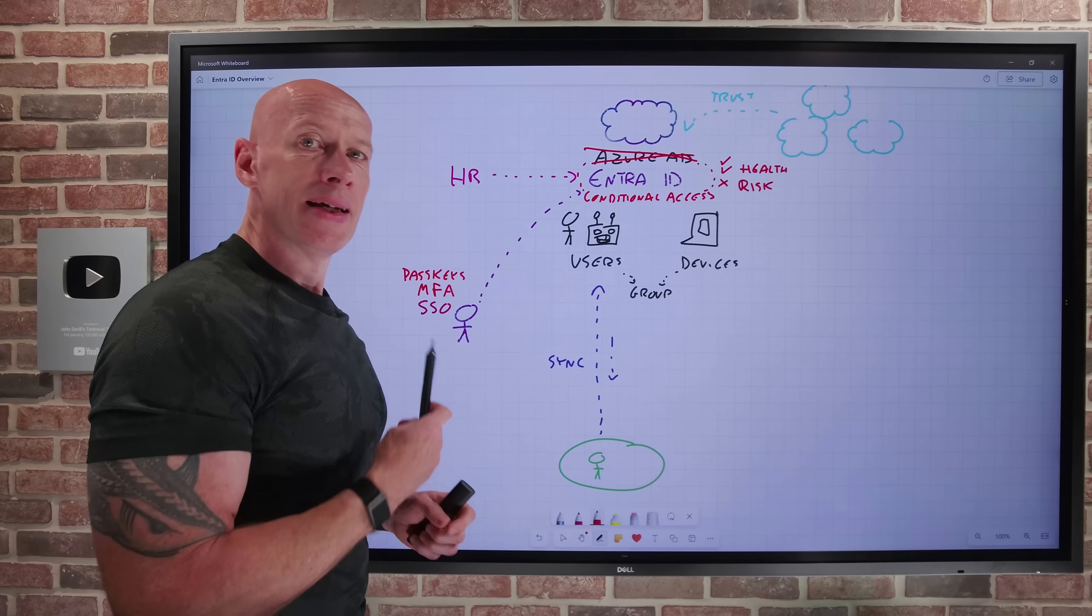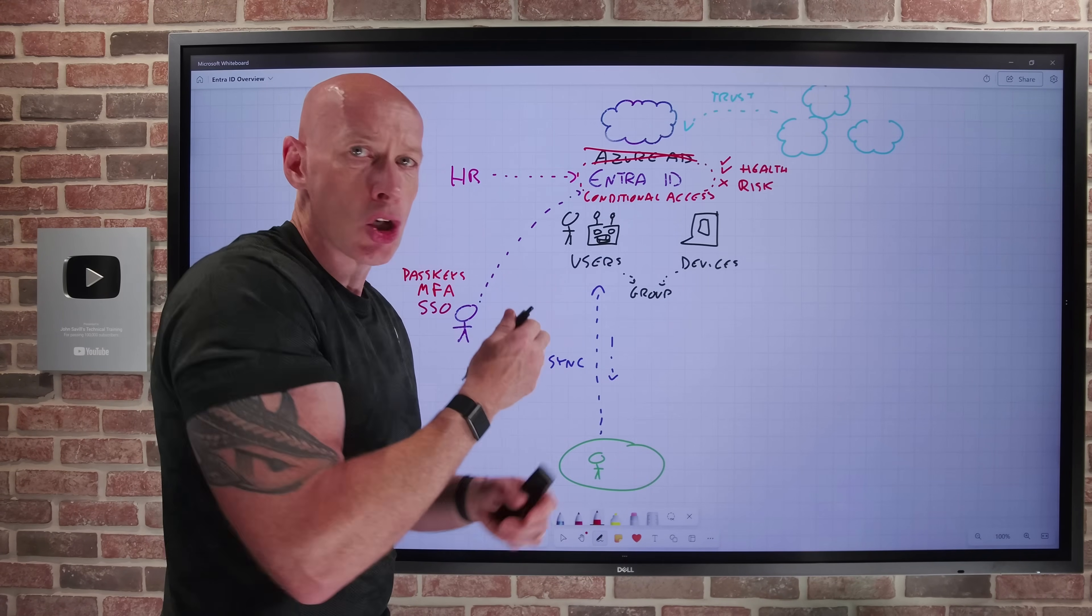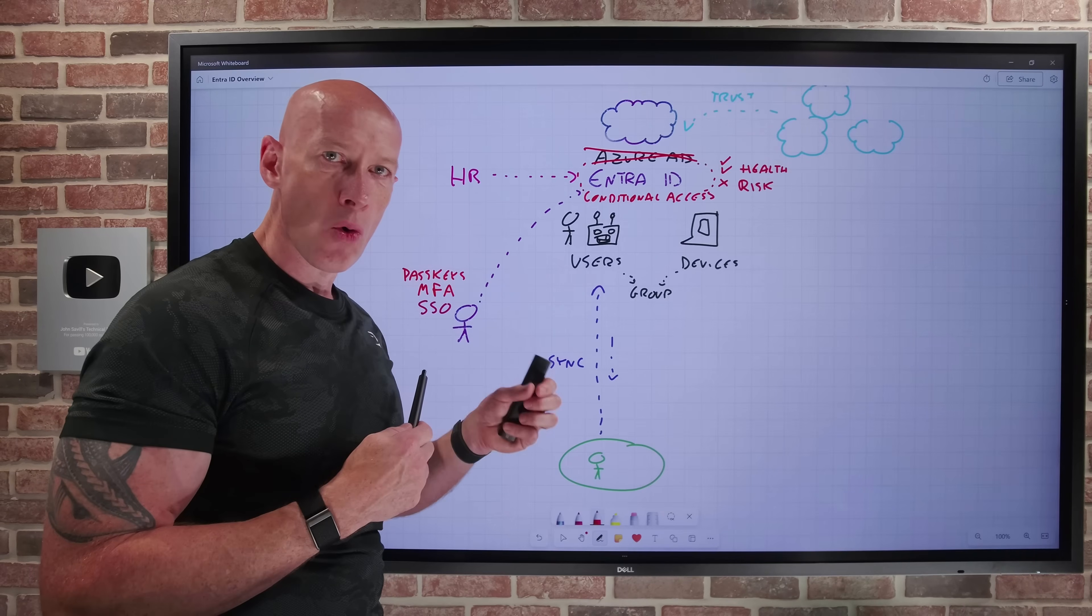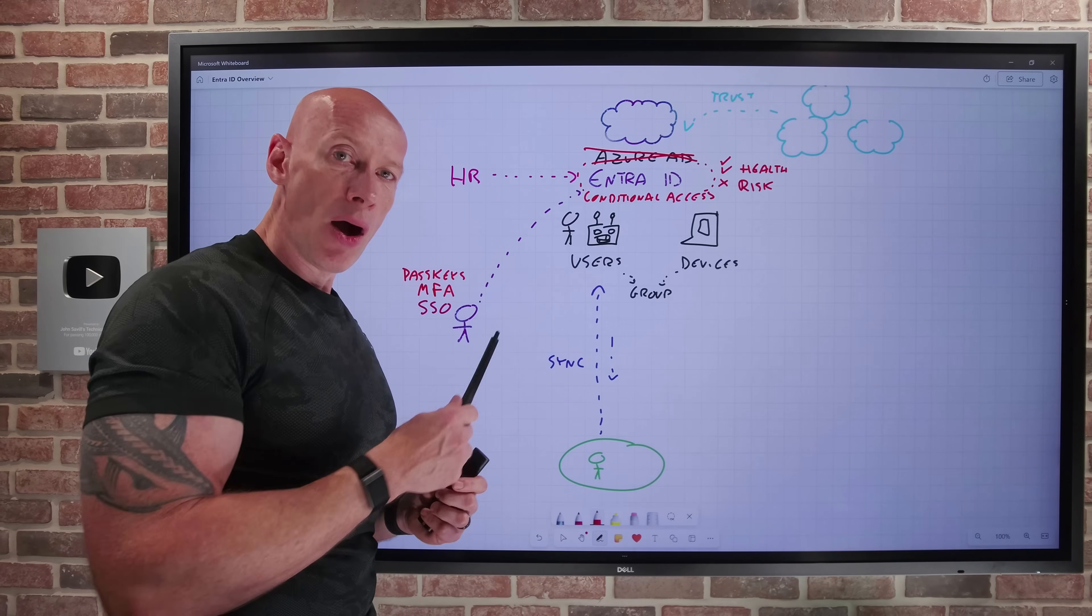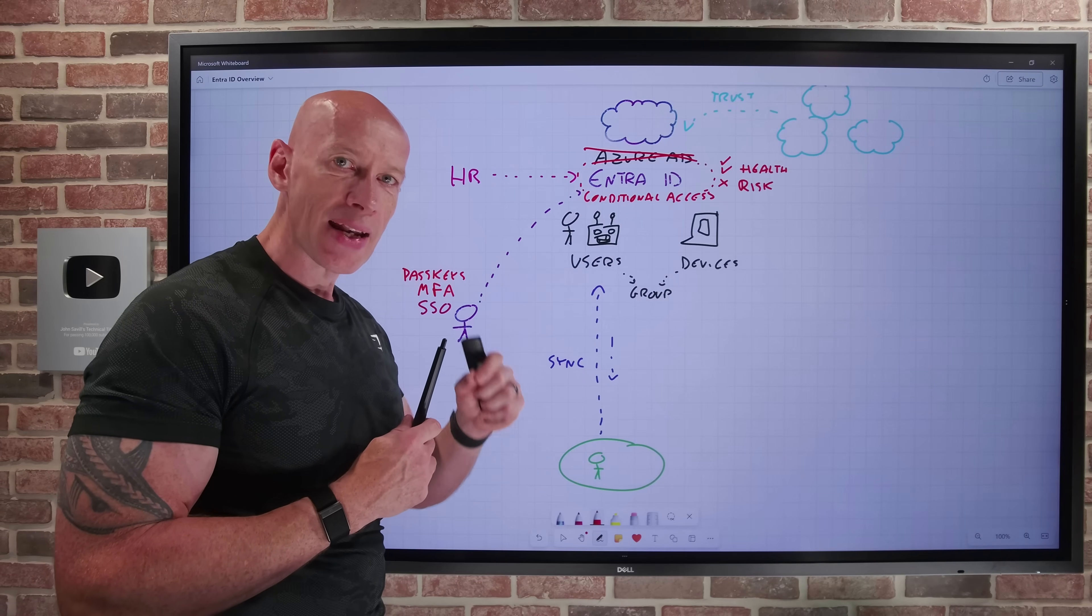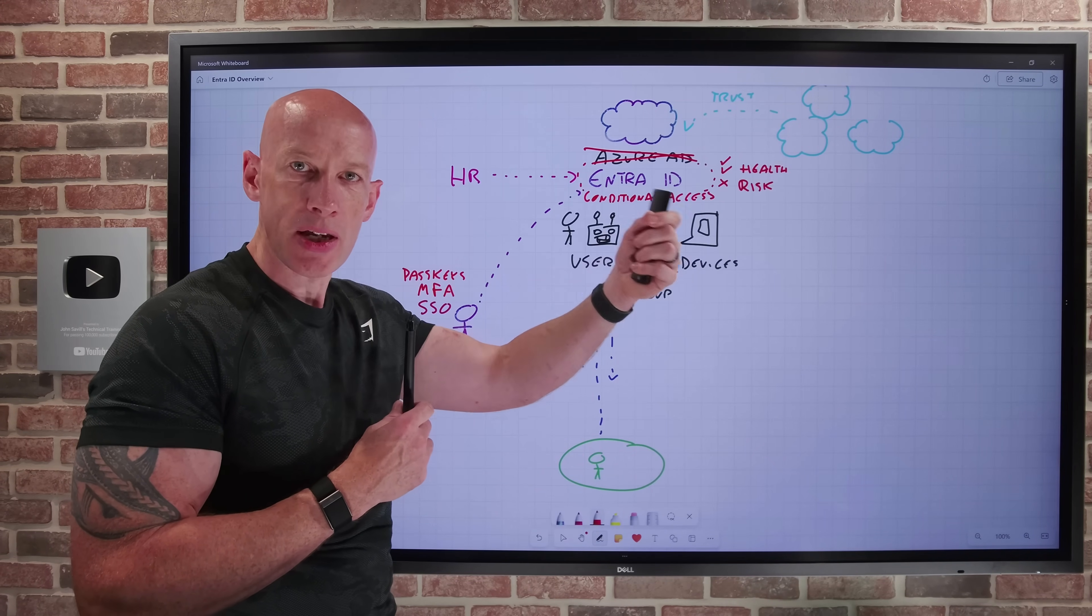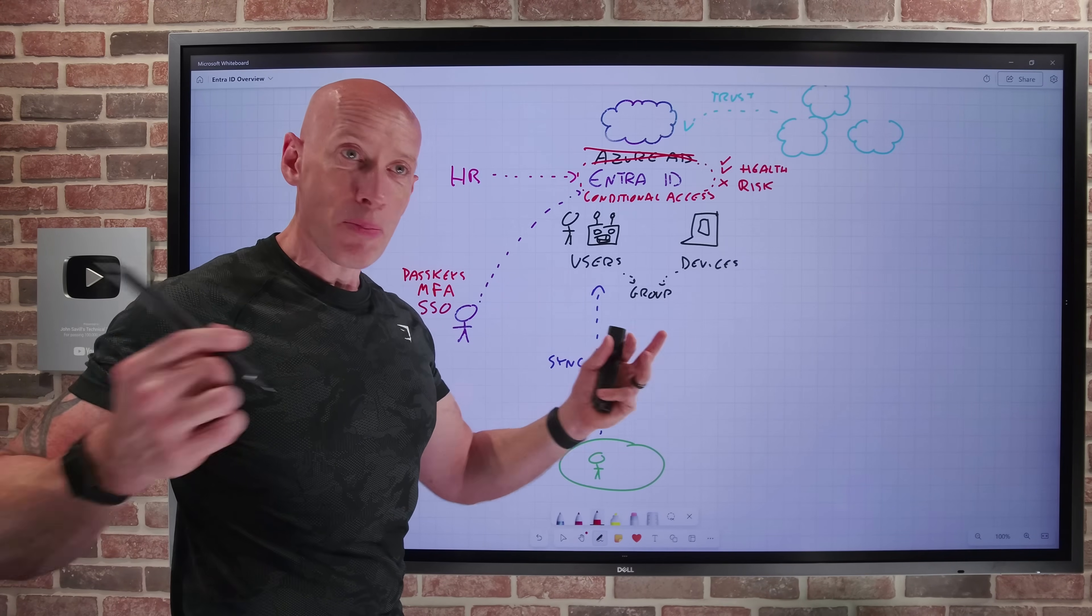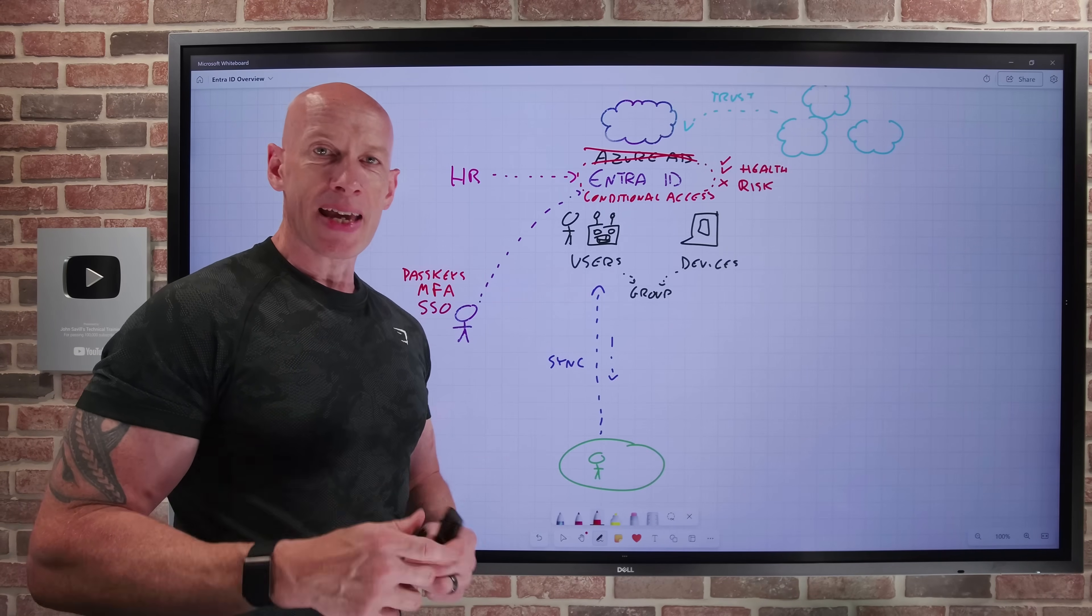So ultimately, Entra helps centrally manage all of the various identities, human and non-human, and your services, your applications across the organization. When you hear about zero trust, Entra ID is a key part of ensuring any identity you have is verified every single time it's trying to perform some access to a service or resource in a completely seamless manner for the user. I hope that helps give you a base understanding of what Entra is. Until next video, take care.